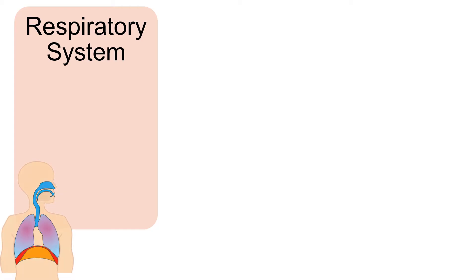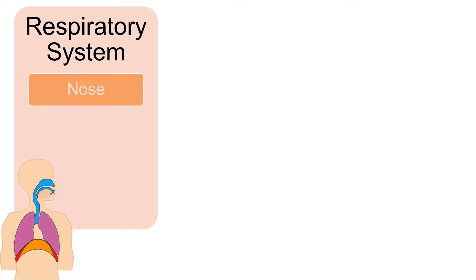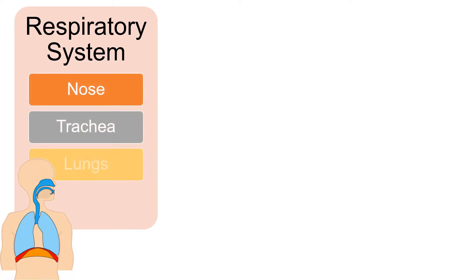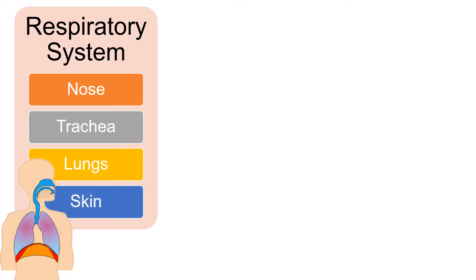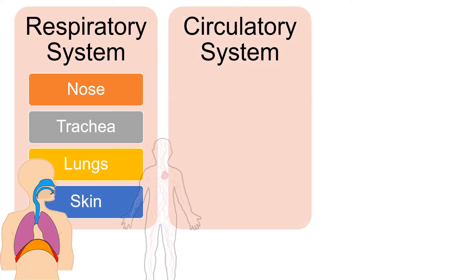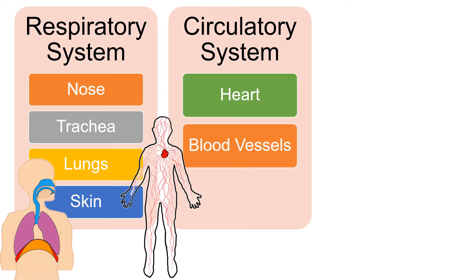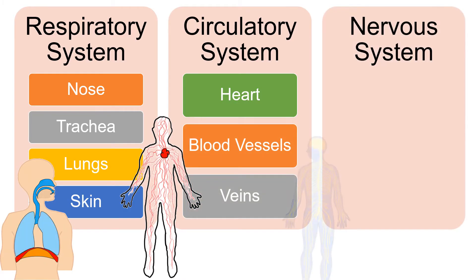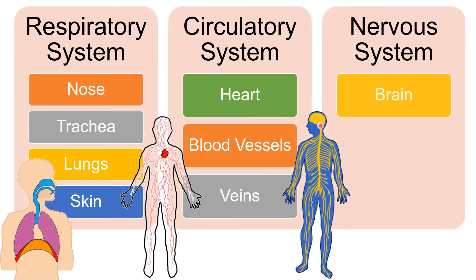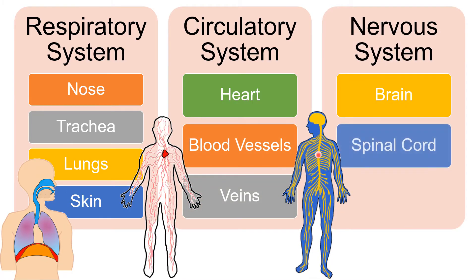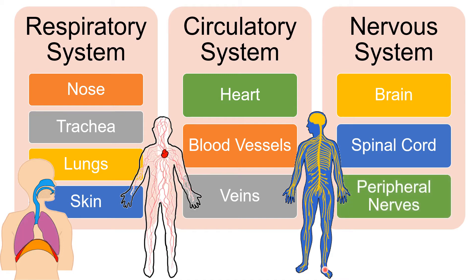The respiratory system is primarily composed of the nose, trachea, lungs, and skin. The organs under the circulatory system are the heart, blood vessels, and veins. The brain, spinal cord, and peripheral nerves compose the nervous system.